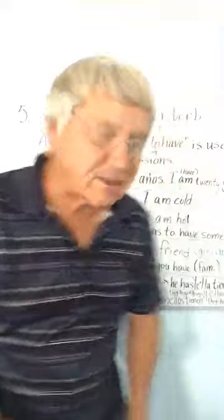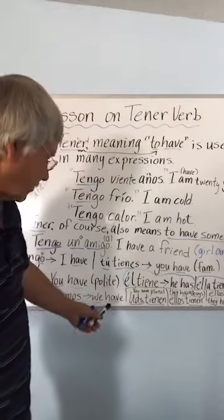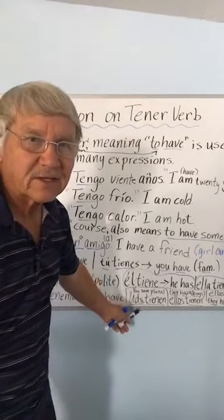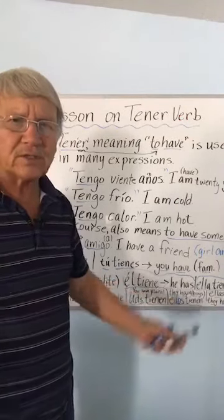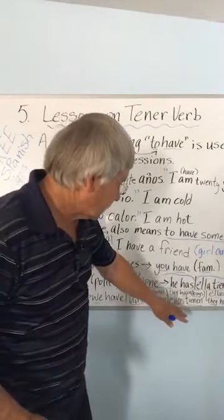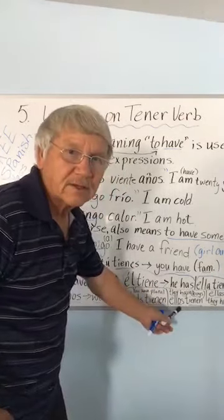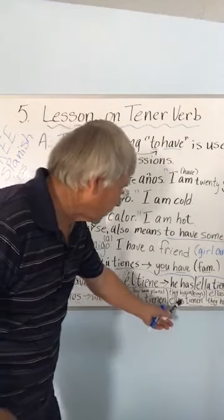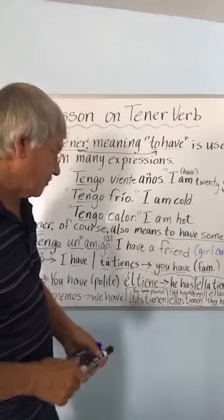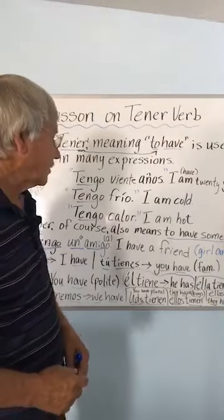Nosotros tenemos — we have. Then you have plural: ustedes tienen — that's like 'you all have,' that's what we say in English, 'you all.' And then ellos tienen — they have, talking about the boys. Ellas tienen — they have, talking about the girls.